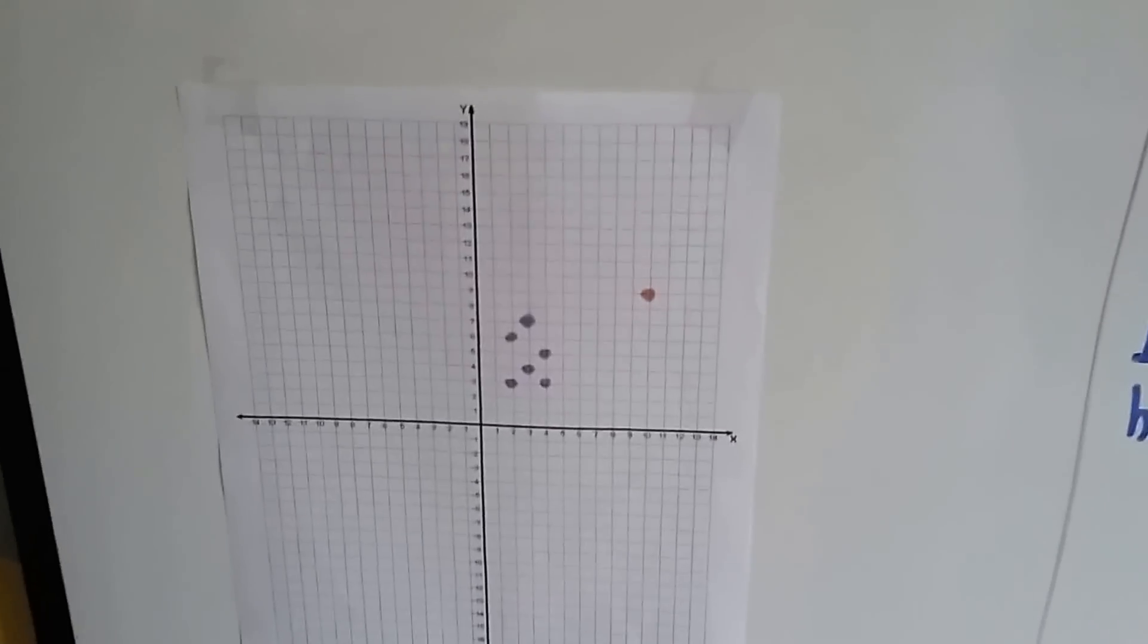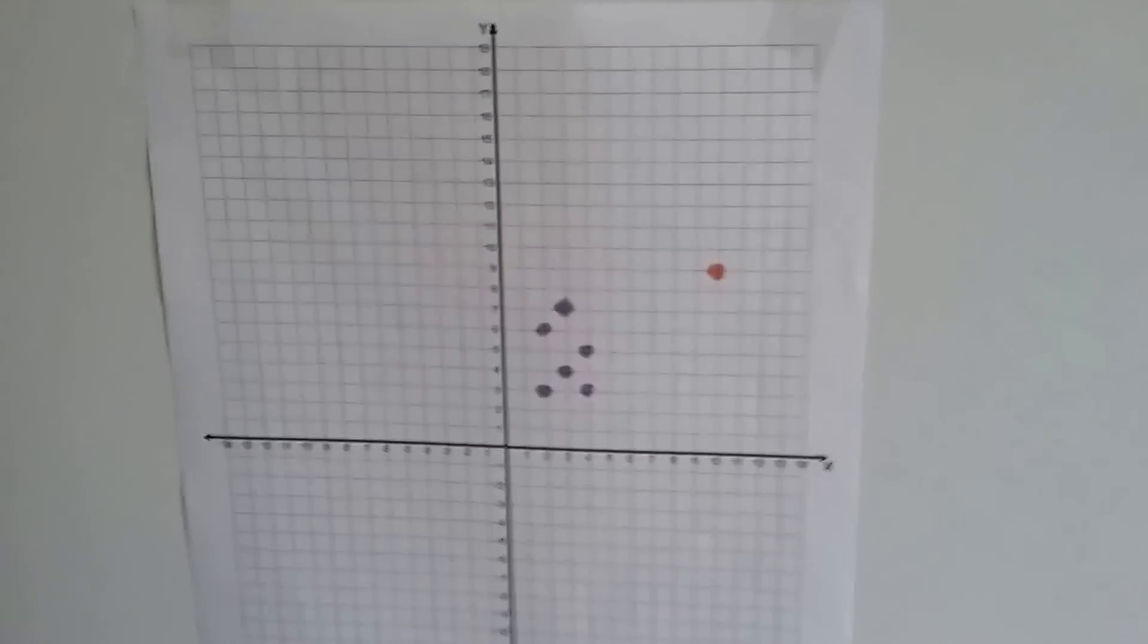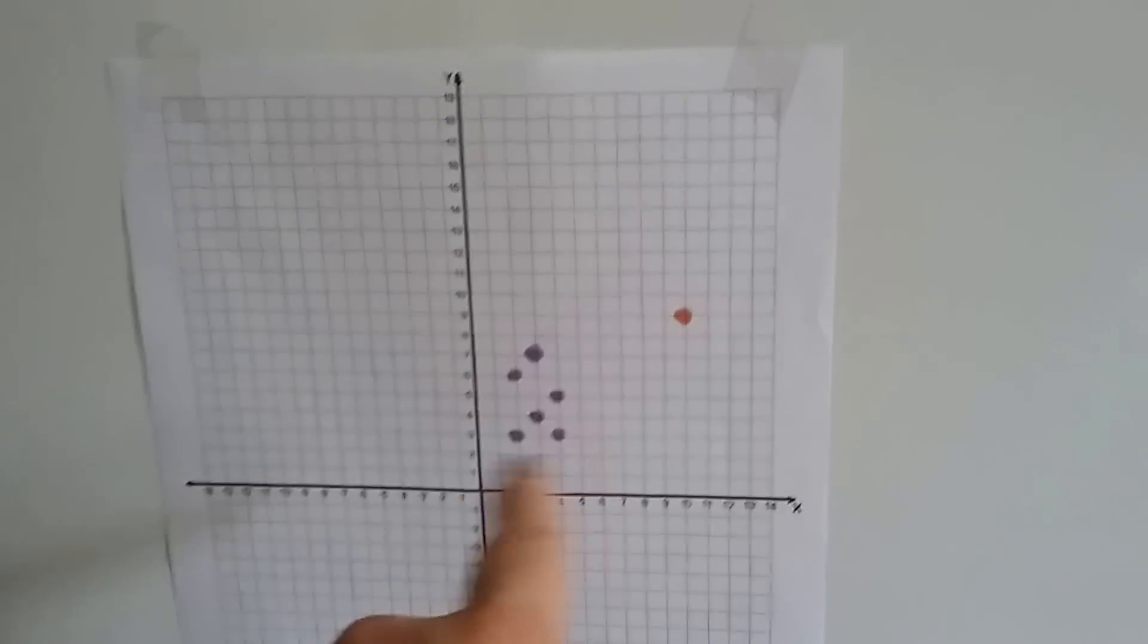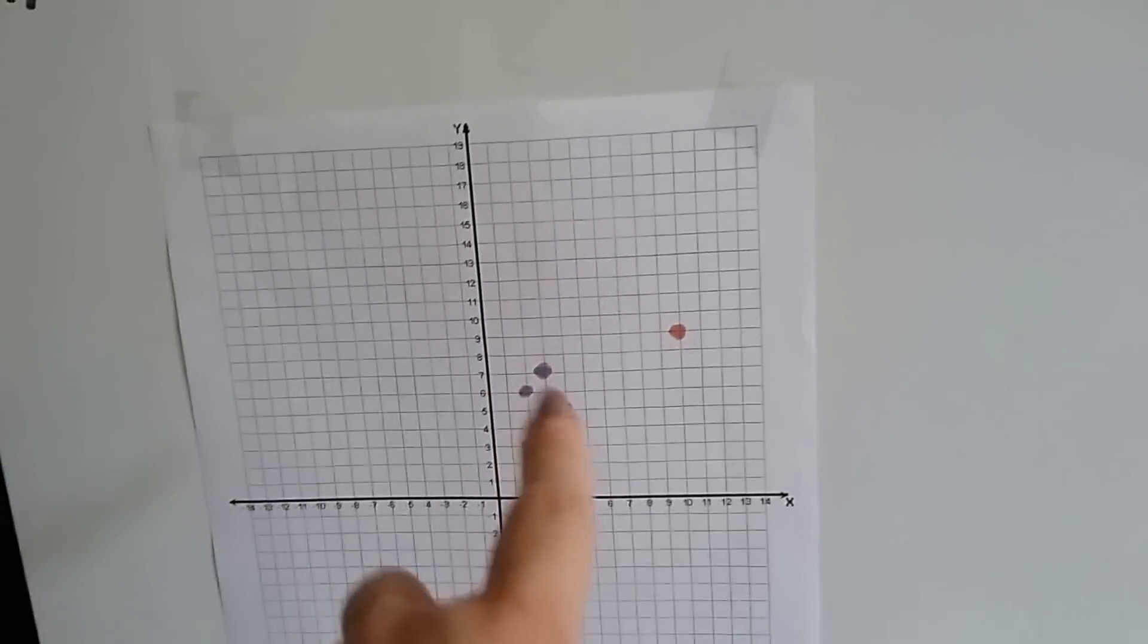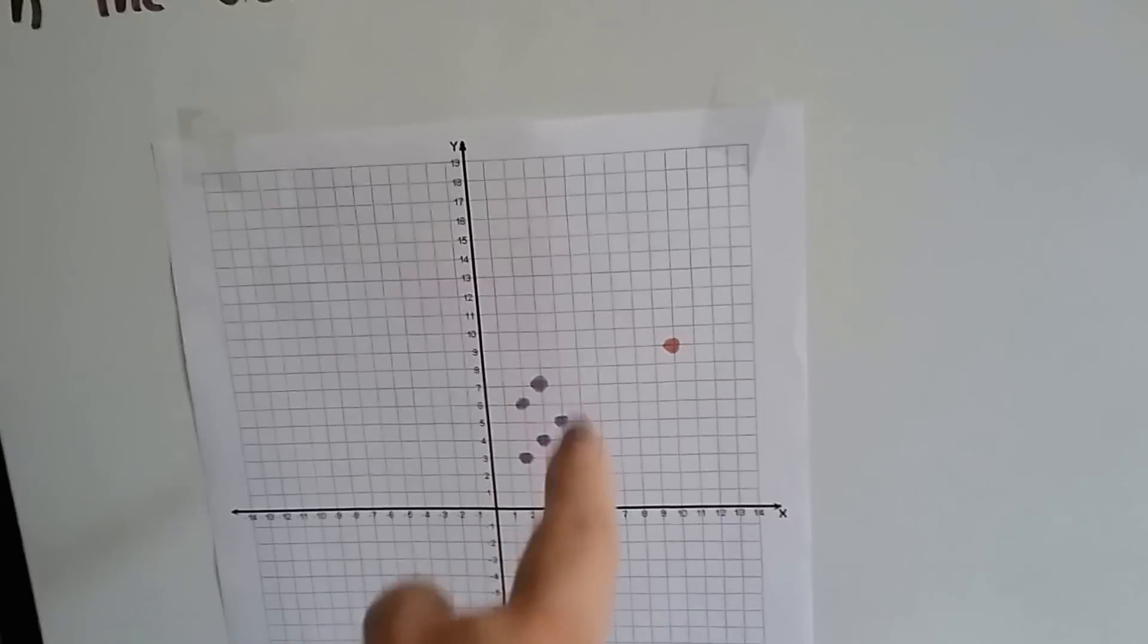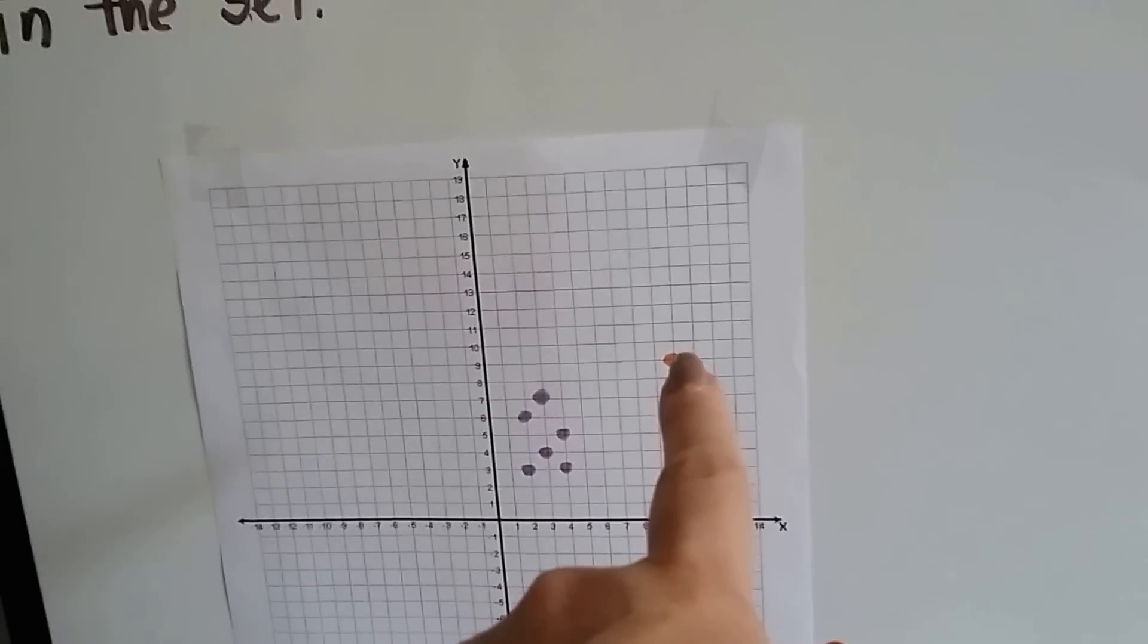So if you saw a graph like this, you could see that these are all clustered together. So these values are very close to each other. It could be a group of kids that are all roughly the same height and maybe there's one tall child.